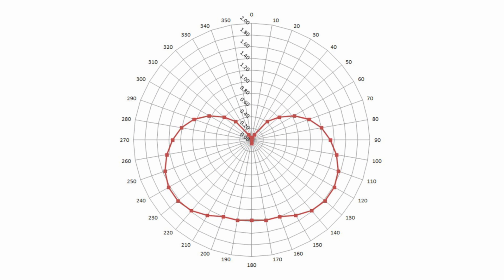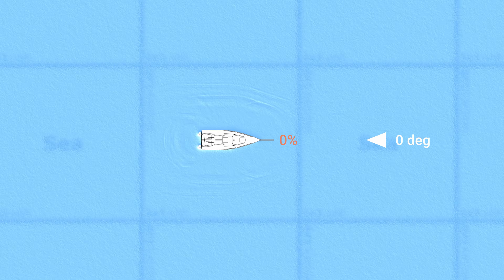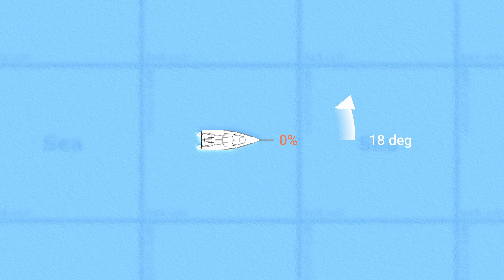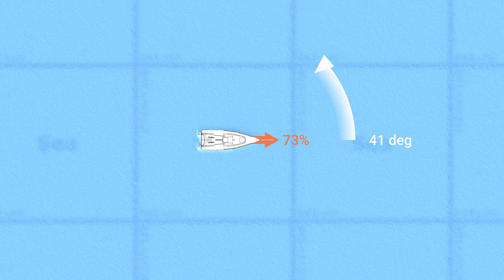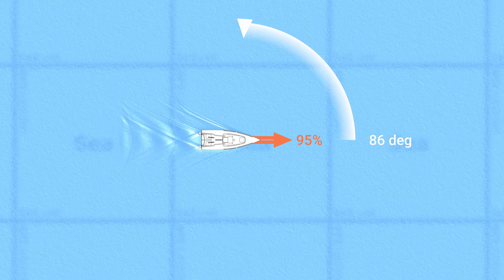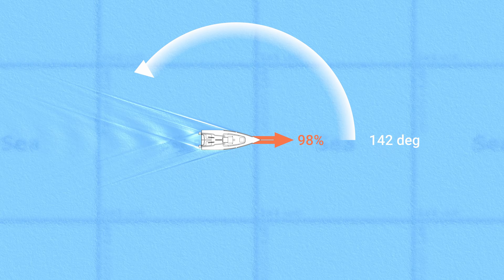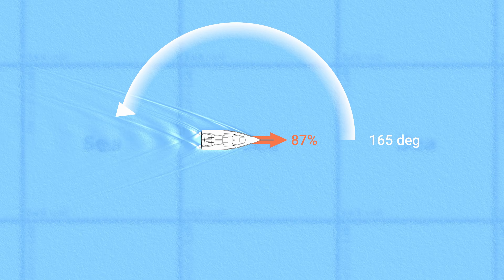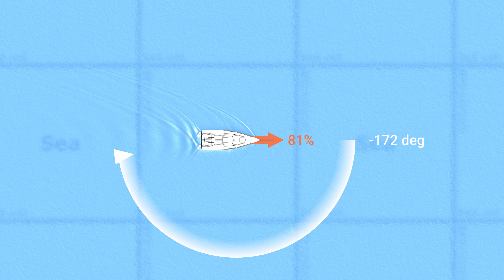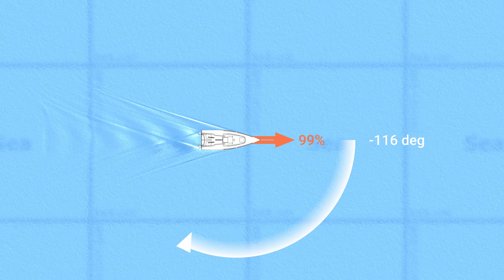A polar diagram provides a theoretical estimate of the maximum speed a boat can reach depending on its angle to the wind. In our simulation, we'll simply use the value from the polar directly as the boat's speed. In practice, this polar diagram depends on each specific boat model and remains an approximation. Nevertheless, it provides results that are consistent with real-world behavior, and for this first step, this approximation will do the trick.